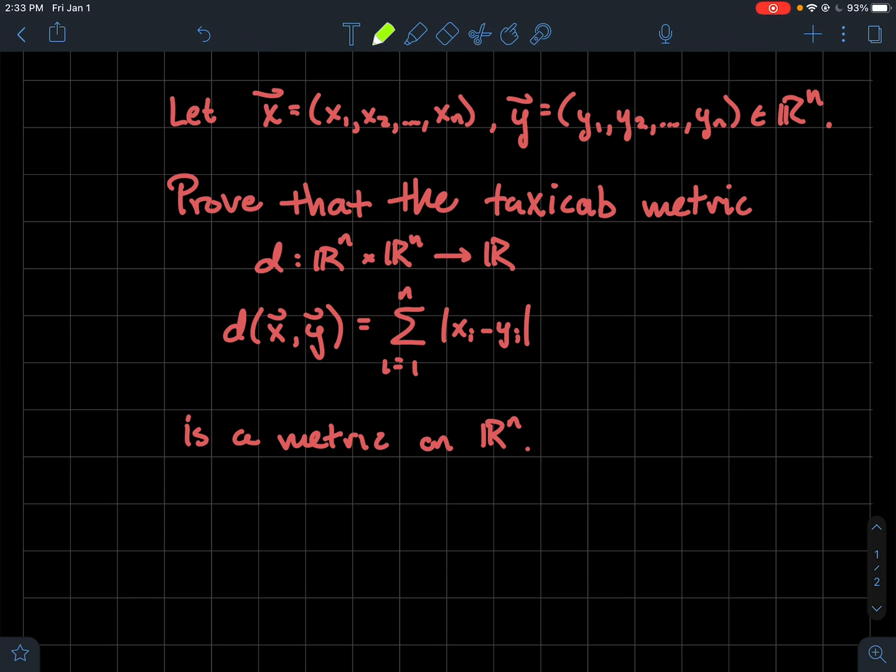So what is the taxicab metric? What's its actual definition? It's a function d, where you plug in two vectors from R^n into it, and it spits out a real number. And so what does this function do to those two vectors you plug in? It's going to sum the absolute value of the difference of the components of each of these vectors.